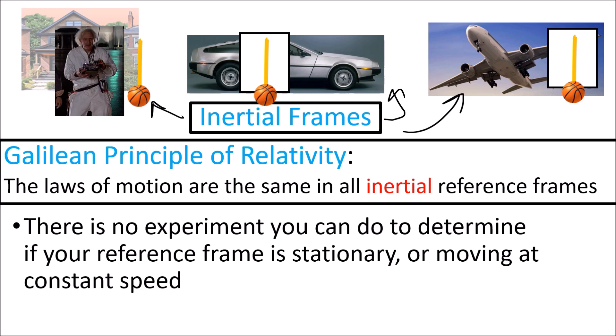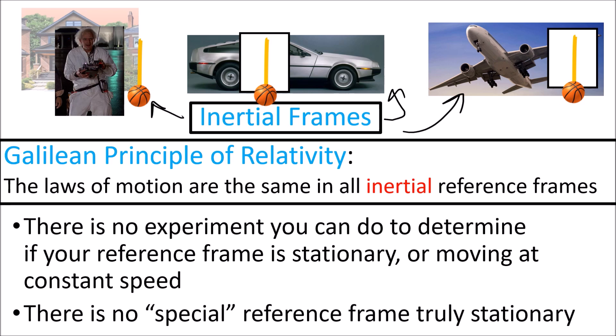Because of this, there is no physical experiment you can do to determine if your own reference frame is stationary or moving at a constant speed. The scientist may think he is standing still watching the car and plane travel past him, but it's equally correct to say the car is stationary with the scientist and plane moving around it. In Galilean relativity, there's no special reference frame that's truly stationary — all motion is always relative to something else. But when reference frames travel at constant speed relative to each other, they all experience the same laws of motion.